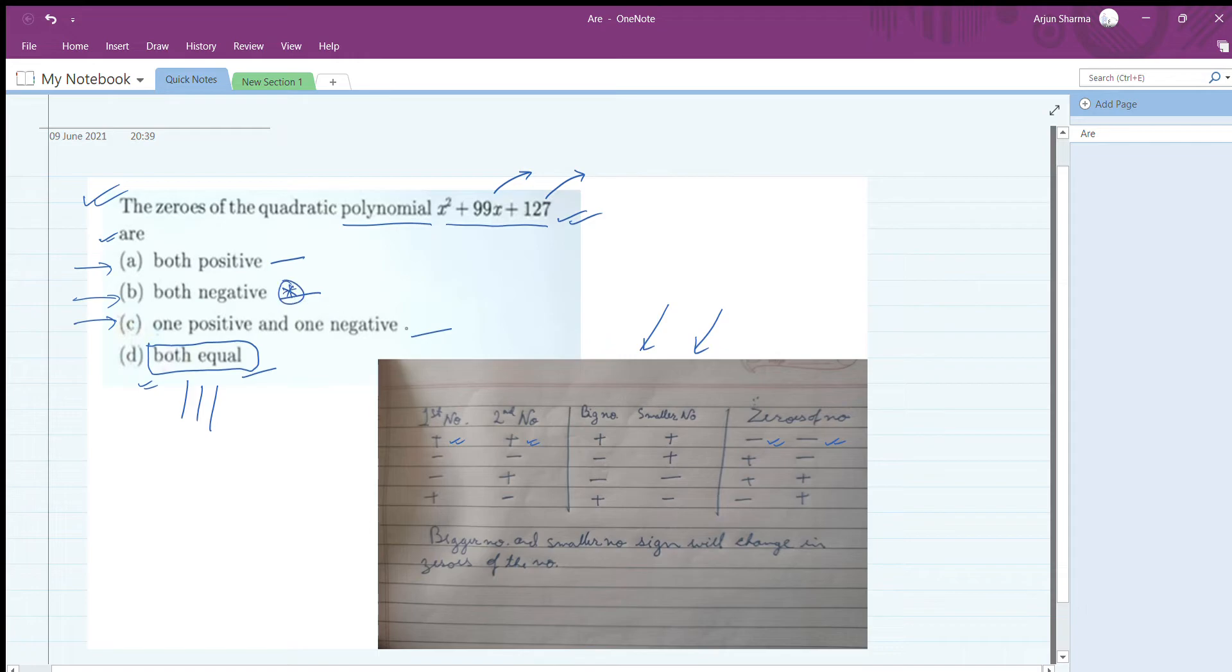Now let's take another question: x² - 99x + 127. When the first number is negative and the second number is positive, first number negative, second number positive.